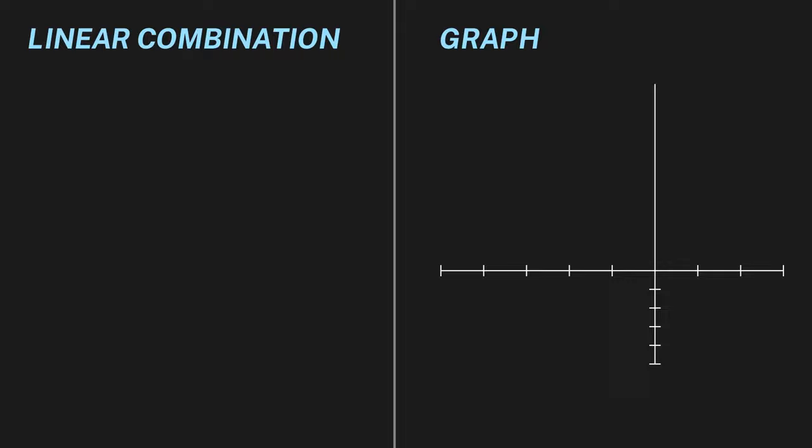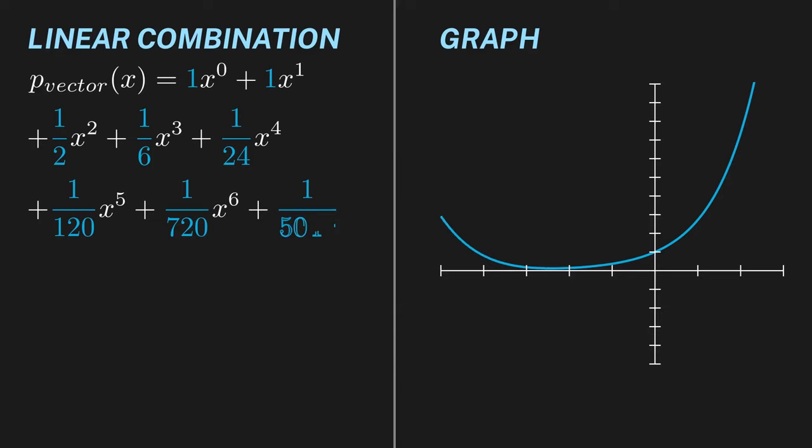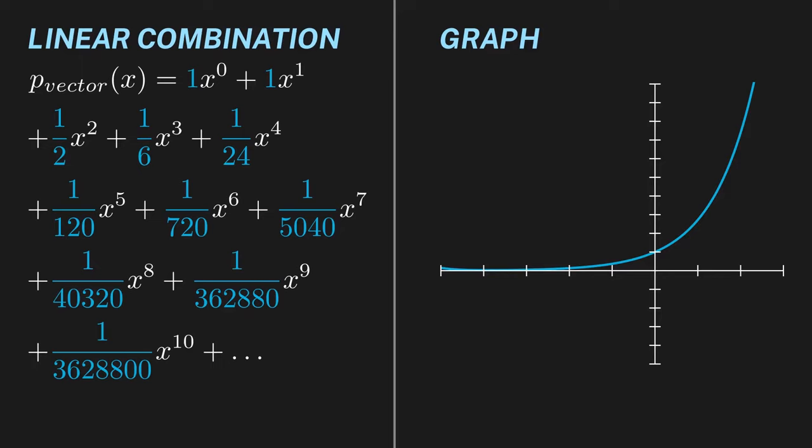Now let us examine what happens when we extend these linear combinations to infinity. Let us use our basis to construct an infinite linear combination with carefully chosen coefficients. The linear combination is shown on the left, and its graph is shown on the right. As we add more and more terms, you may notice that the function starts to look familiar. You might recognize that with infinitely many terms, we would have the Taylor series for e to the x. This should be a huge surprise, since e to the x is obviously not a polynomial. Therefore, we ended up with something completely outside of our vector space.